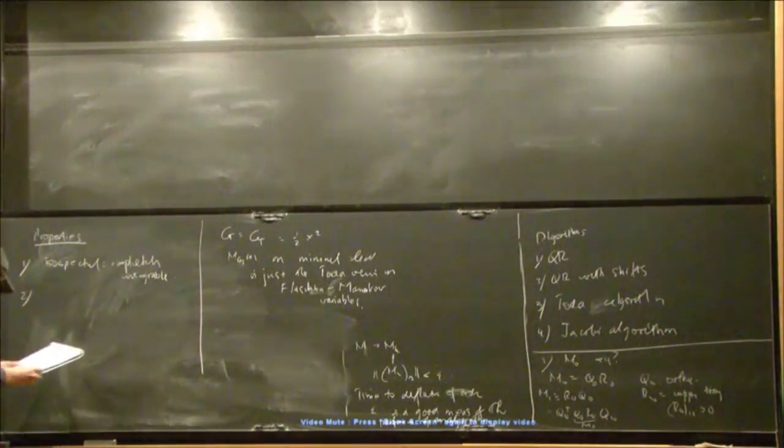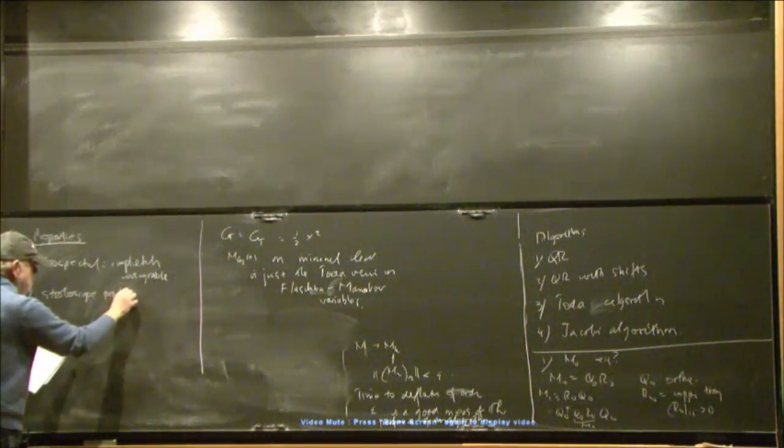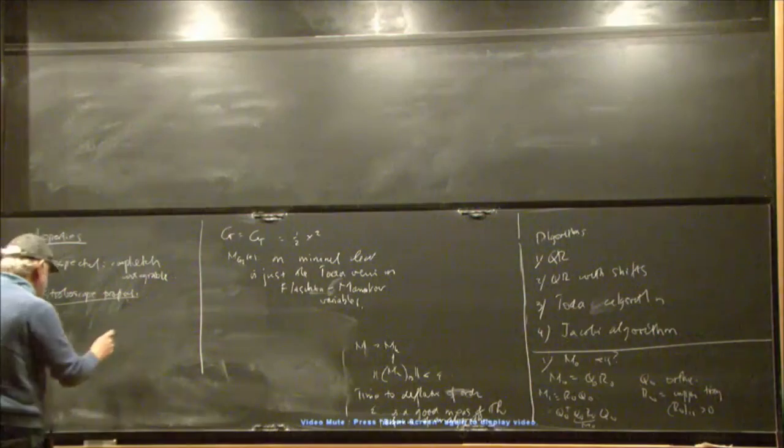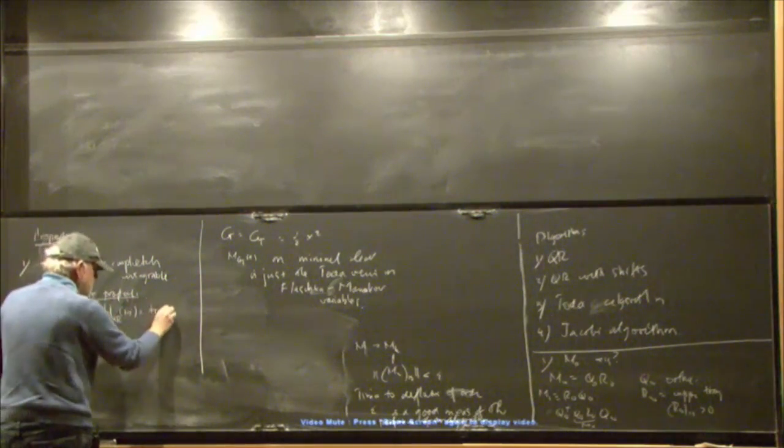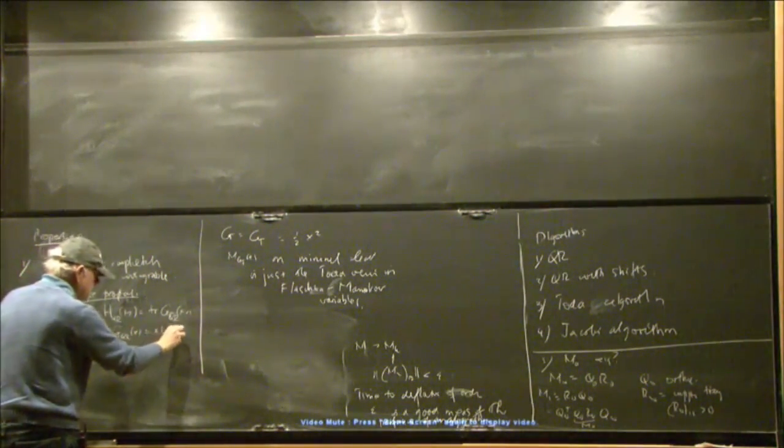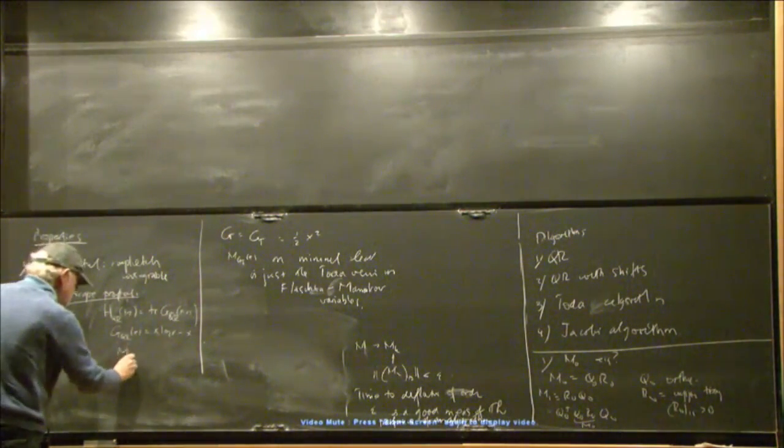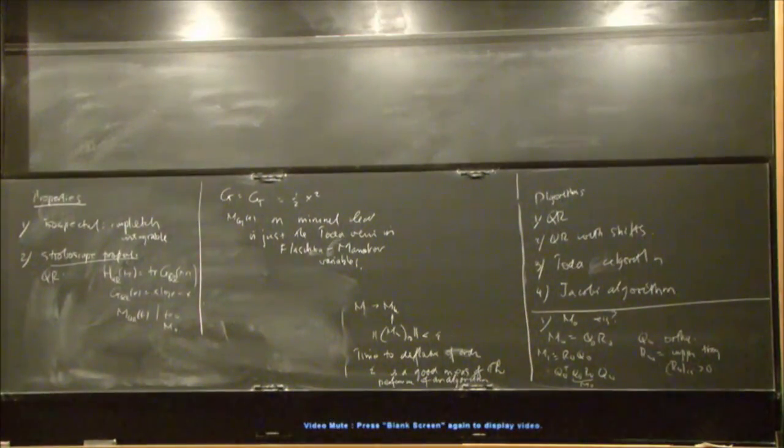Secondly, is that there is a stroboscope property. And all these flows have this property. I'll illustrate it with the case of QR. Now, it turns out that the following is true. That if you take for a Hamiltonian, which I'm going to call HQR of M, to be the trace of G of QR of M, where G QR of X is X log X minus X. Take that particular choice. And I'll look at the flow generated by this Hamiltonian and I'll call it MQR T with initial condition M0.